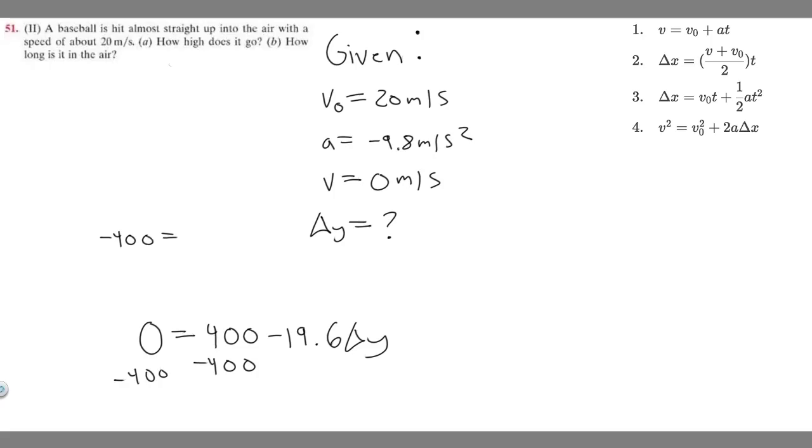If you divide both sides by minus 19.6, that's going to give us Δy by itself. So minus 400 divided by minus 19.6 is going to equal 20.4.